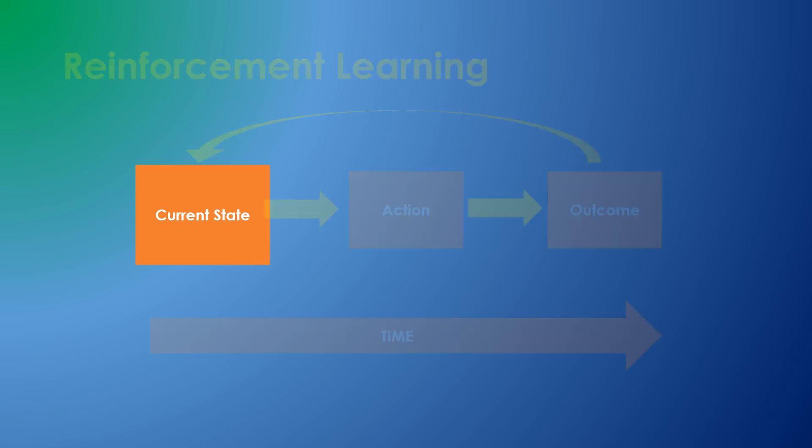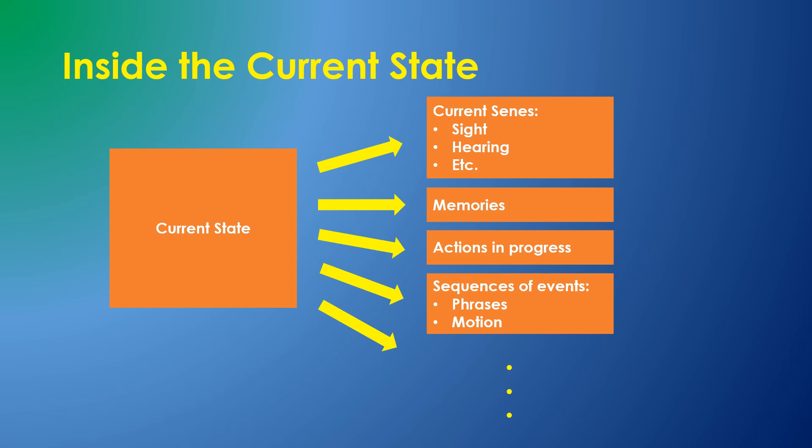The current state is the complete state of the entity. Of course, this includes the current sensory inputs, but it also should include memories, any actions currently in progress, sequences or events like phrases or objects in motion, and innumerable other things.